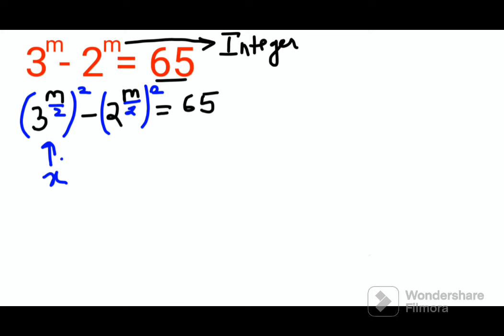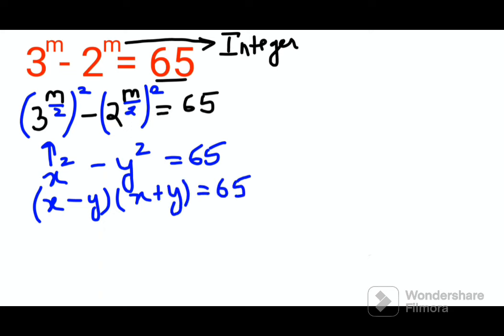What we'll do is 3 raised to m over 2 can be taken as x, then this becomes x squared. This becomes y squared. This becomes 65. Now we have x minus y times x plus y which equals 65. We can take factors of 65 as 1 and 65, or we can do 5 and 13.